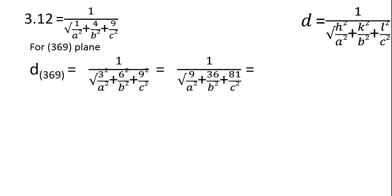What we are doing is we do the same thing for (369). Taking the squares, here the common multiple we take outside is 9.